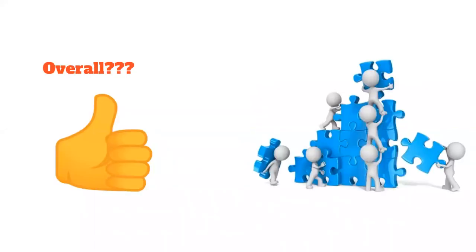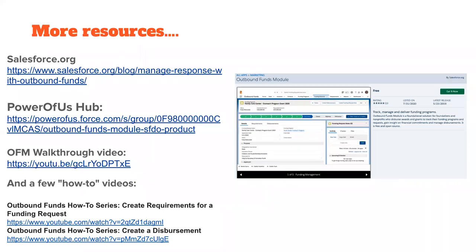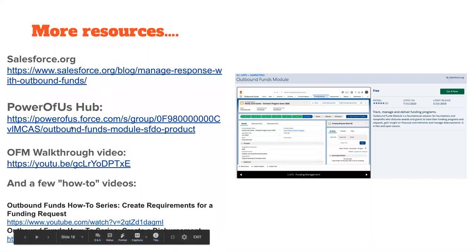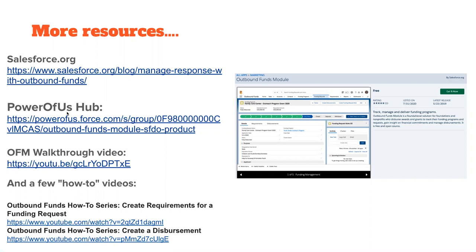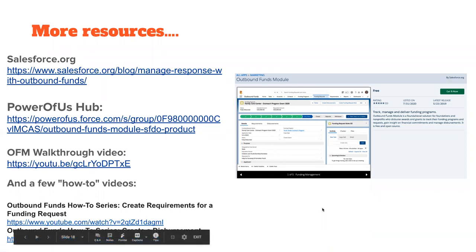If you want to get more information about this, feel free to screenshot this slide. It's on the salesforce.org website. The rest of the information is available on the Power of Us Hub — there is a special Power of Us Hub group for the Outbound Funds Module specifically. If you're looking for what I showed you, go to the Outbound Funds Module group, not the grants management group. They have some really thorough videos, including a full walkthrough and several short how-to videos, plus documentation and installation steps.